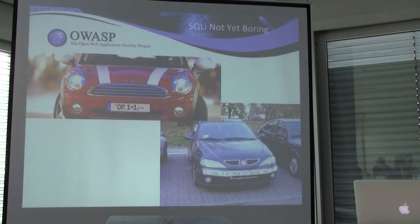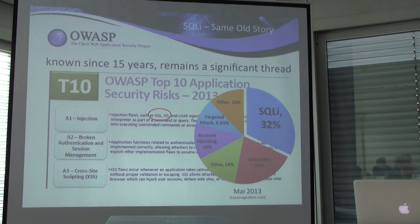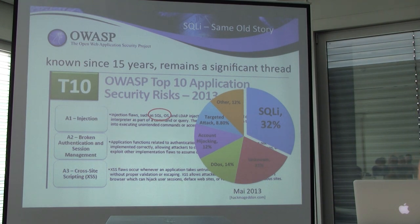SQL injection is not yet boring, as you can see on these pictures. People are very creative in where you could use SQL injection — for example, to compromise road pricing systems. Nevertheless, also for web applications, it's still one of the major threats. In OWASP Top 10, it belongs to the first category with the highest risk: injection. And in almost any statistics you find on the internet, it has almost the highest risk rate.